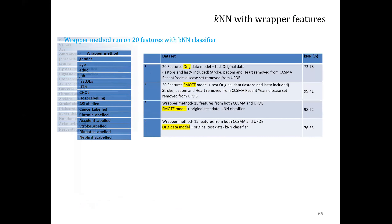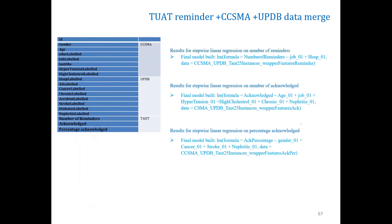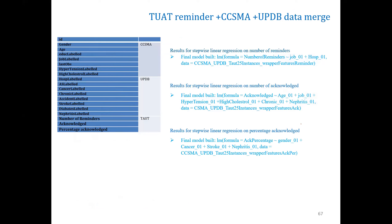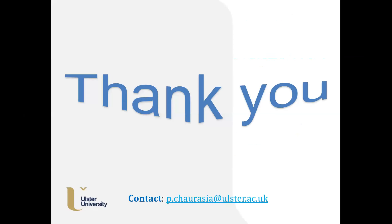We also considered the UPDB dataset — number of times hospitalized, for what kind of diseases, and whether they were hospitalized in the recent three years. When we combined both the CCMA and UPDB datasets, the features were quite enhanced and we got higher accuracy. With 20 features we were able to get good accuracy with both the Neural Network and K-Nearest Neighbors models. The papers are available but this was more academic work.